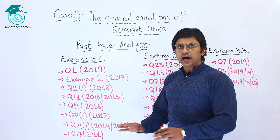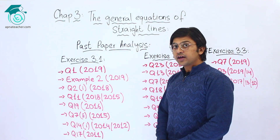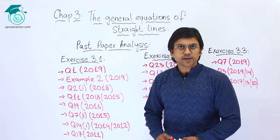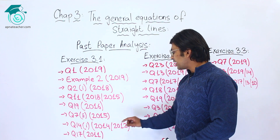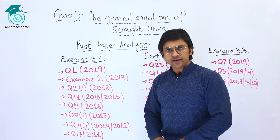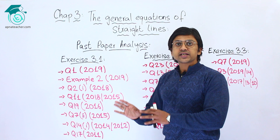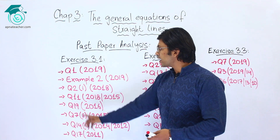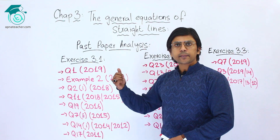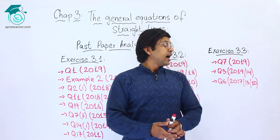Question number seven, part two was asked in 2015. Question number fourteen, part one was asked in two years: 2014 and 2012. Finally, question number 17 was asked in 2011. So overall, if you look at Exercise 3.1 from the past 10 years, a total of 8 questions have been asked: 1, 2, 3, 4, 5, 6, 7, 8. Now let's talk about Exercise 3.2.